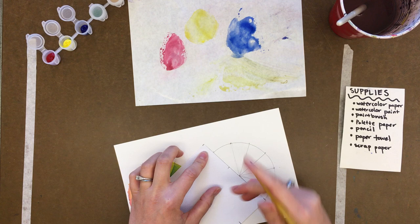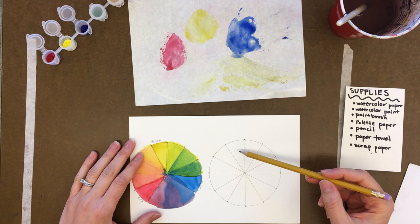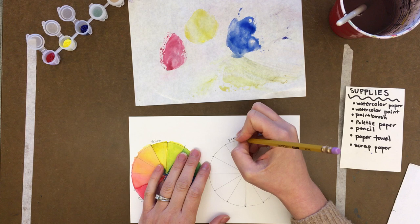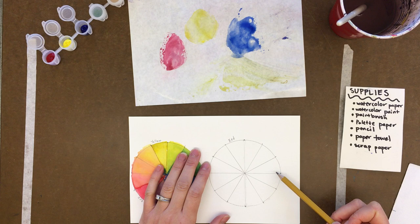Okay, so now I have my circle with 12 sections, and the next step is to write down just like I did here: red, yellow, and blue. So I'm going to write down red - I always like to start with red - and then you're going to create three spaces with nothing in between each primary color. So red.